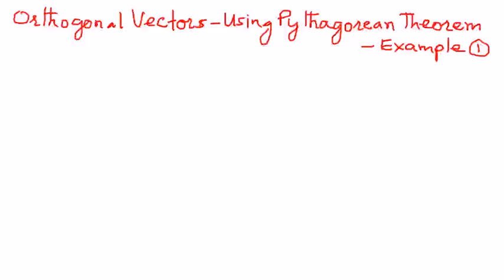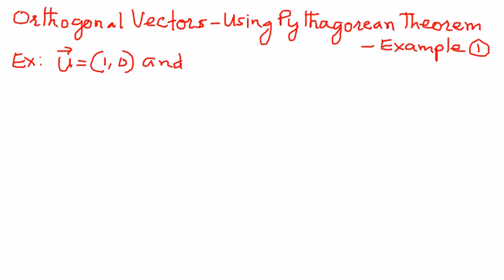So let us take an example. In this example, if we have two vectors, and if u is a vector with the components 1 and 0, and there is another vector v which has components 0 and 2, we want to use the Pythagorean theorem to show that these two vectors are orthogonal or perpendicular to one another.